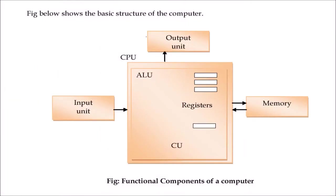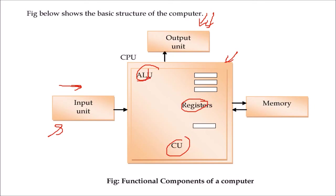This is the basic structure of a computer. You have an input unit where you input the data, an output unit where you view results, and inside you have the ALU, registers, and control unit. The ALU does arithmetic and logic operations, the control unit governs when to do what, registers hold data to perform certain actions, and memory holds data and instructions that can be fetched and stored back.